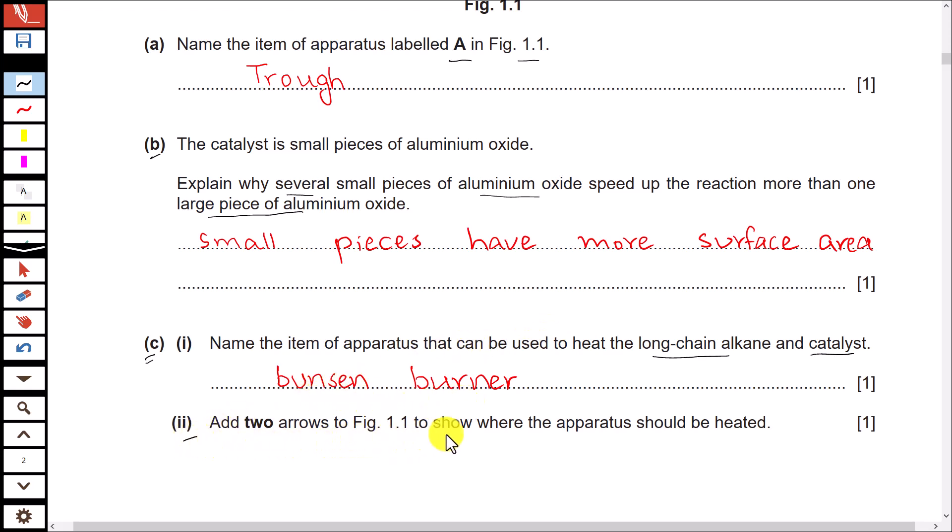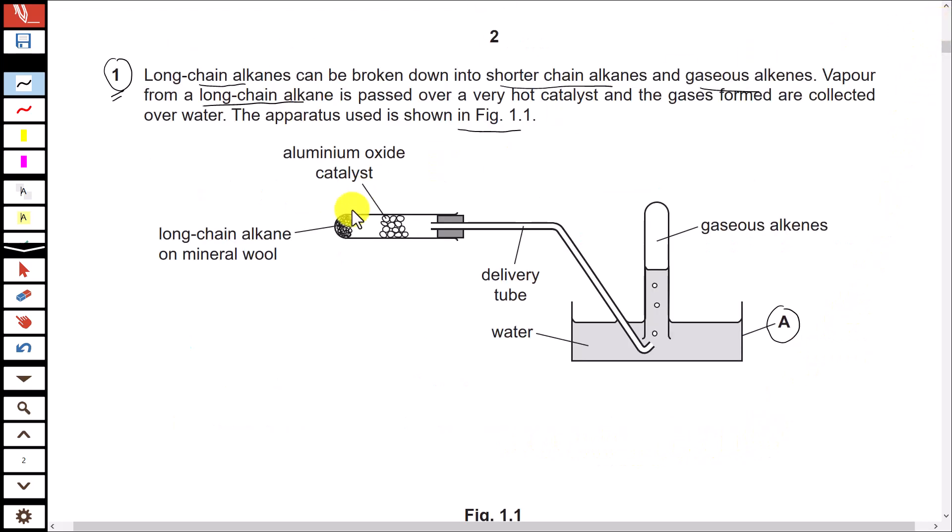Add two arrows to show where the apparatus should be heated. Well, we have to heat the long chain alkane, so one arrow is here. And we also have to heat this aluminum oxide catalyst, so second arrow you have to show at this point.